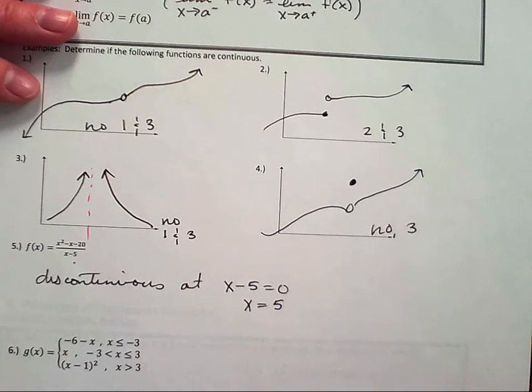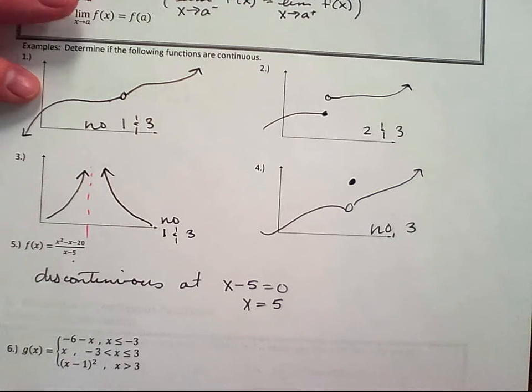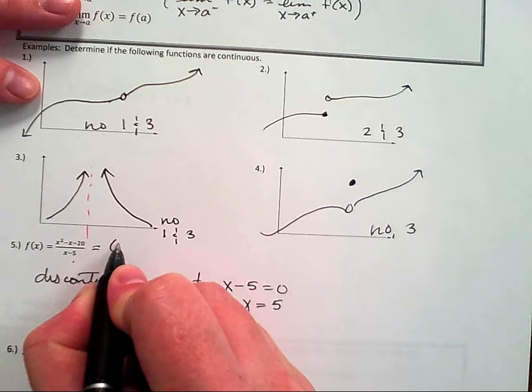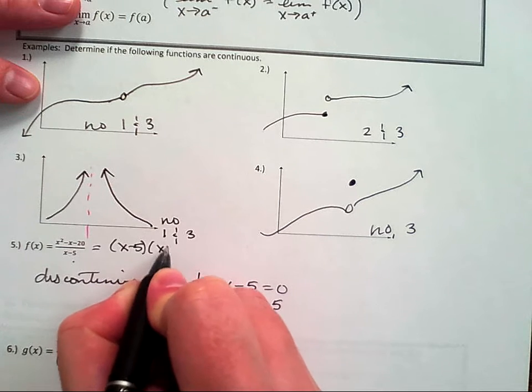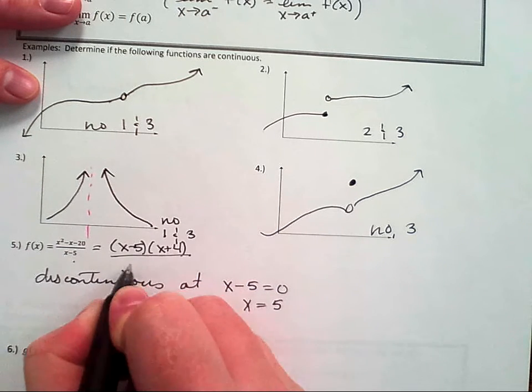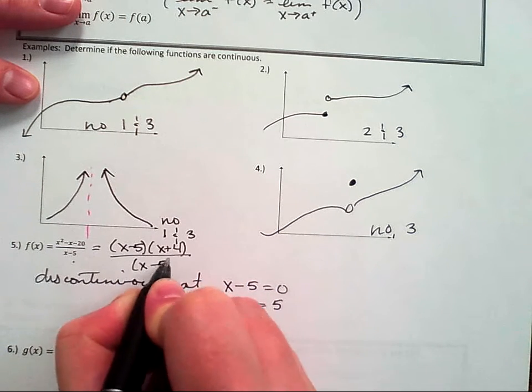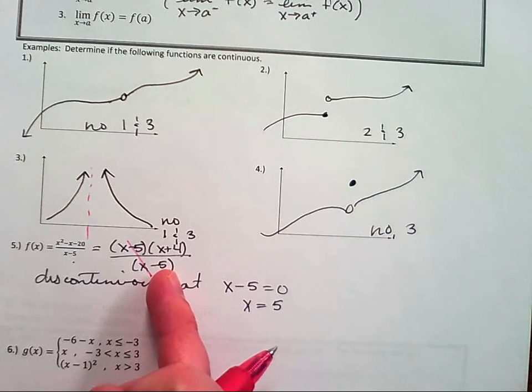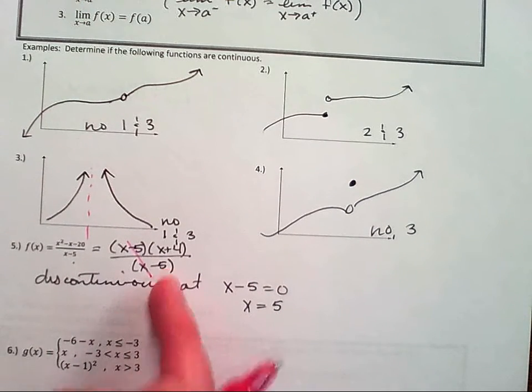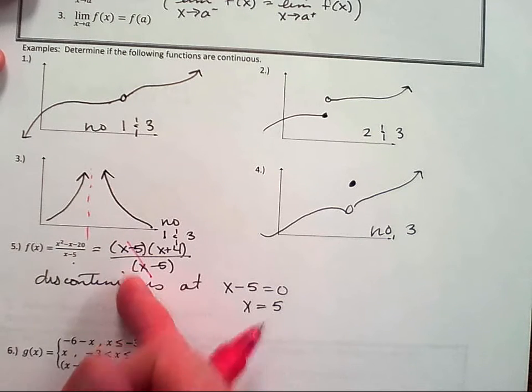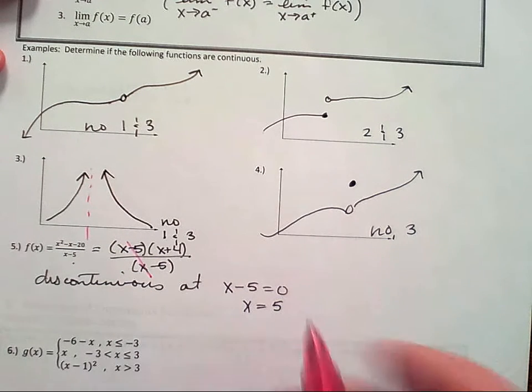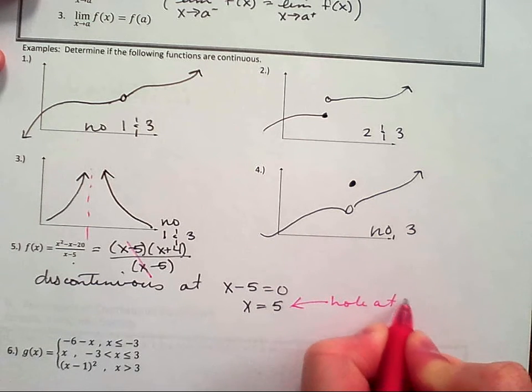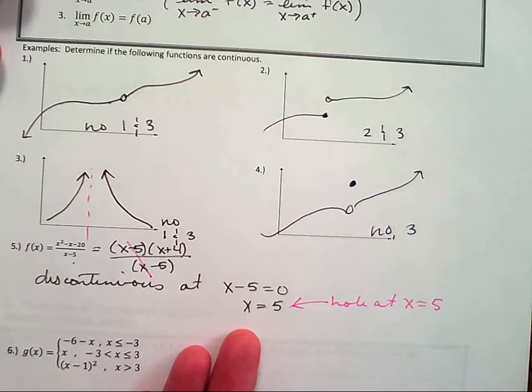Can you simplify the function first? You can simplify the function. If you simplify the function, what happens? It's just going to be x plus four. So you factor the numerator. So what kind of discontinuity does this mean? So here, the thing is that here I've written an equivalent function. When I factor and cross out, that means that there's a hole there.